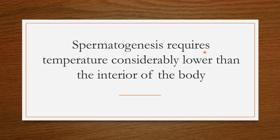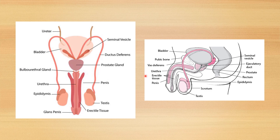Spermatogenesis requires temperature considerably lower than the interior of the body. If we look at the male reproductive system, it consists of testis, epididymis, and vas deferens. It meets with the seminal vesicle and they form the ejaculatory duct, which drains into the prostatic part of the urethra, then the penile part of the urethra and the penis. The two major functions of the male reproductive system are spermatogenesis — synthesis of sperm — and steroidogenesis — synthesis of testosterone.